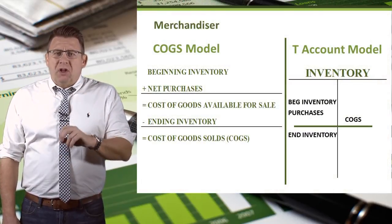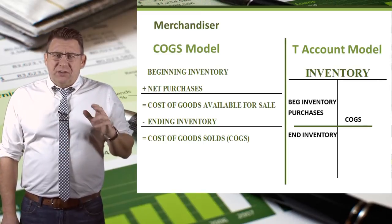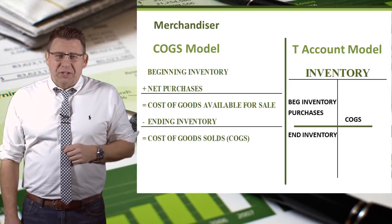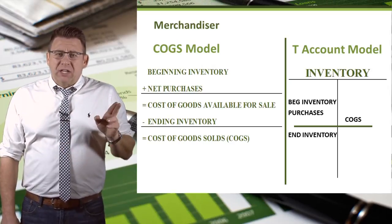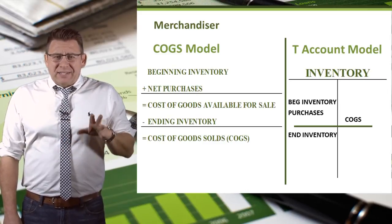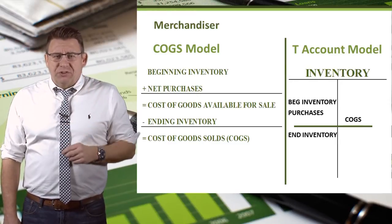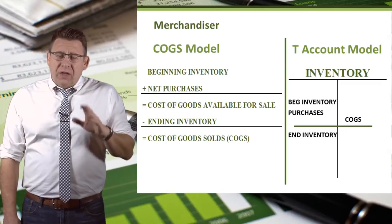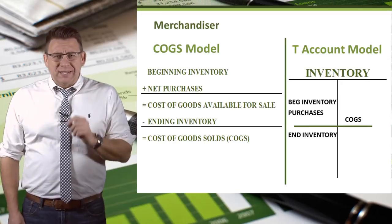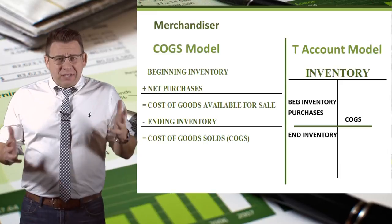Let's recall the cost of goods sold model from financial accounting. This model is for merchandisers, which is what you learned in your financial accounting course. Basically, we start with beginning inventory and add to it the net purchases for the period. These two together are called the cost of goods available for sale — it represents all the goods we can sell. We can't sell more than everything we had on hand, plus everything we bought.